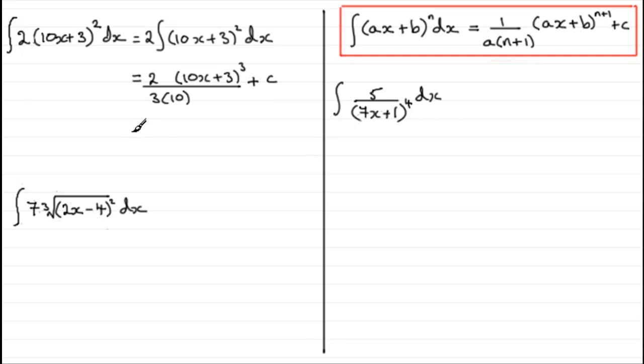So cleaned up, this gives us 2/30 or 1/15. One-fifteenth of (10x + 3)³ and then the constant of integration. You could in fact just write (10x + 3)³/15 if you want and just drop that 1. It's up to you.